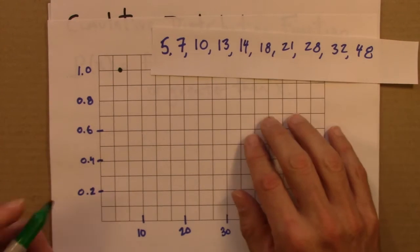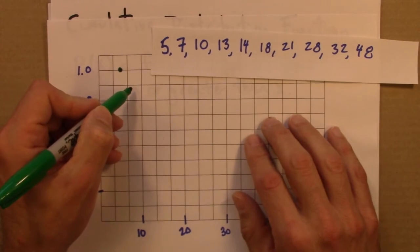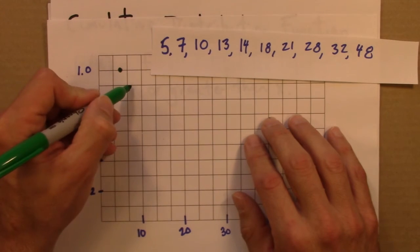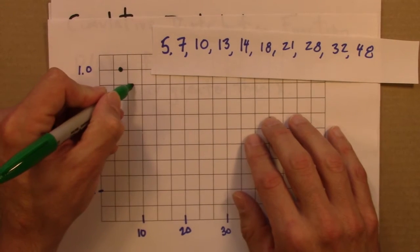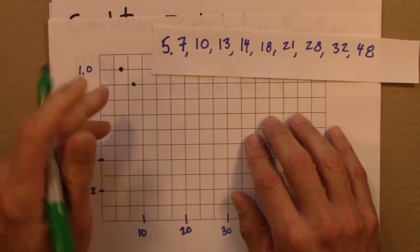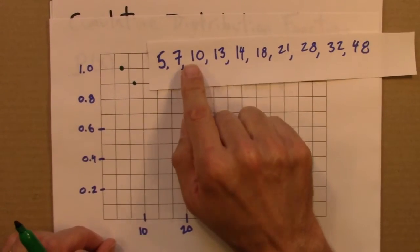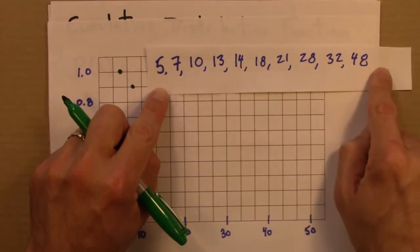Then if I go over to 7, for 7 I would be down at, let's see, 7 is around here. I'm going to be down at 0.9 because 90%, 9 tenths of my data have a value of 7 or greater.